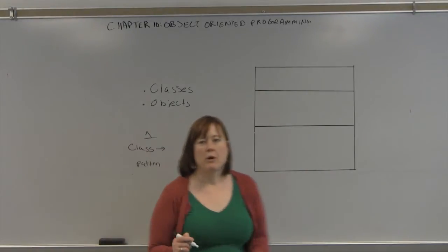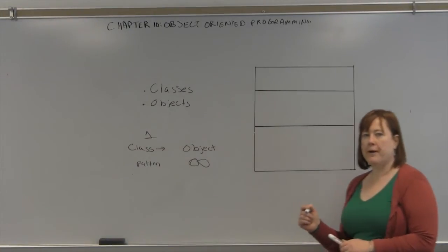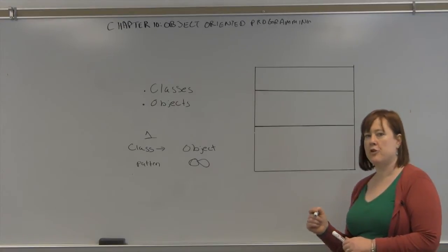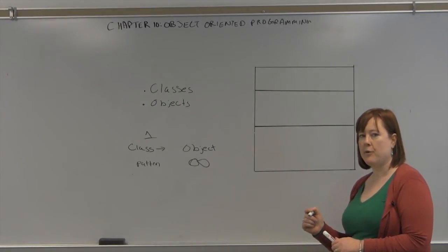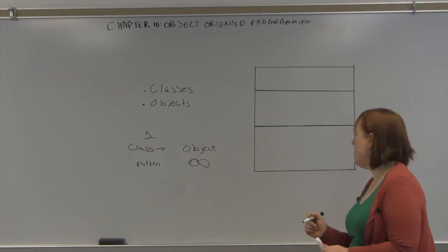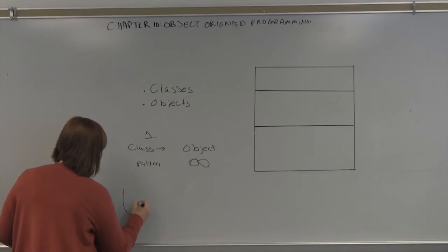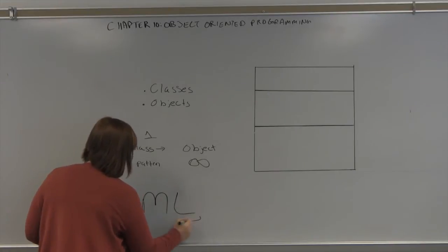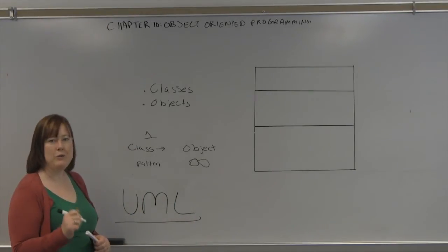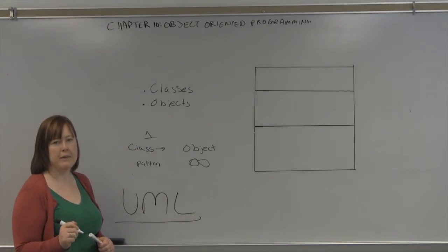Once we get into working with object-oriented programming, we don't use flow charting to describe the object-oriented programs. What we use is UML, and that's called unified modeling language.